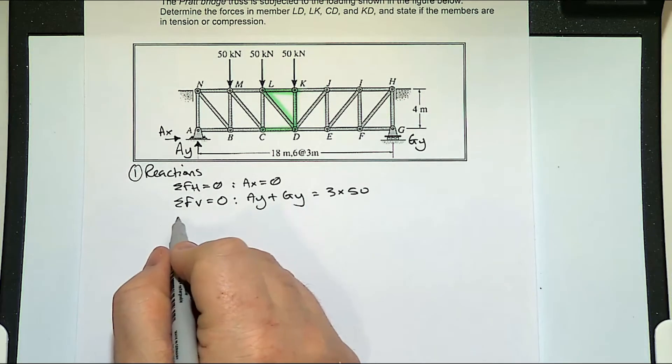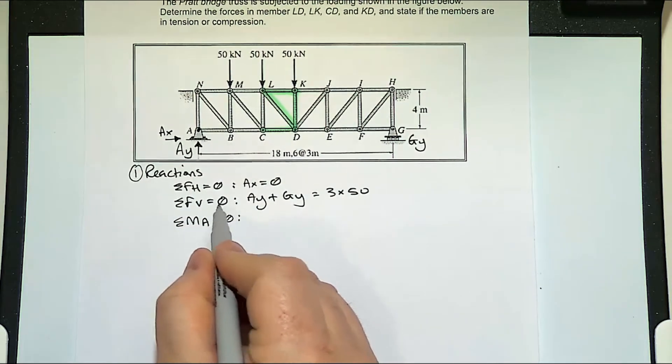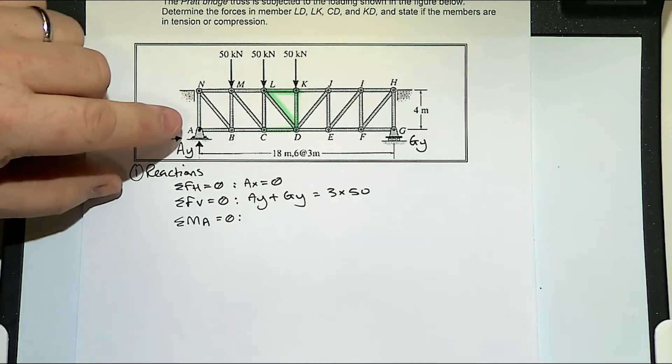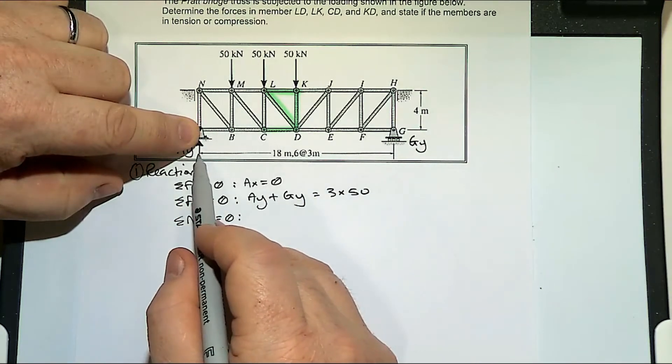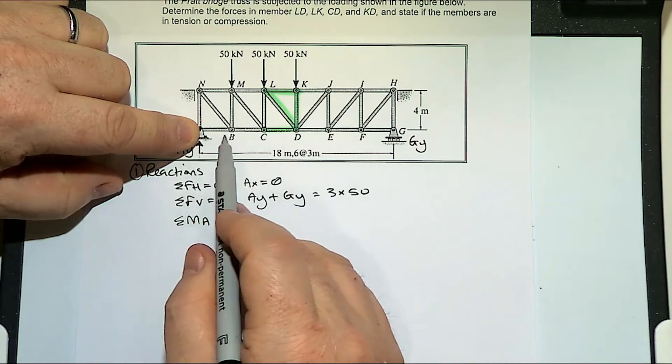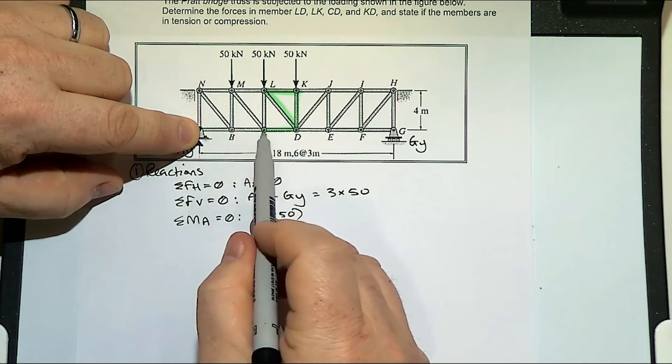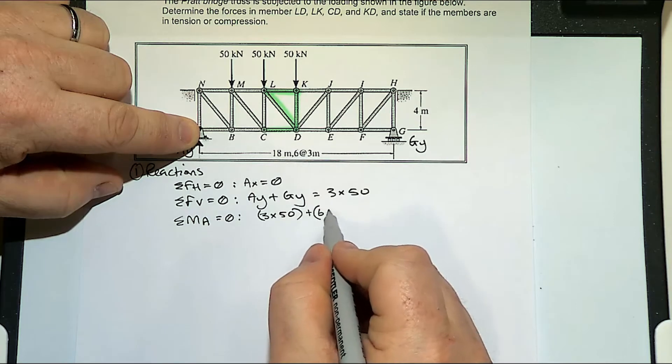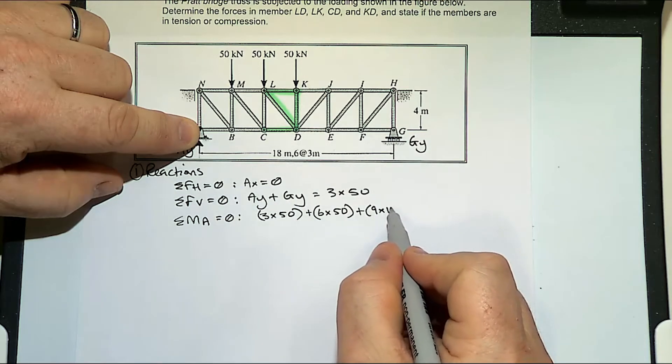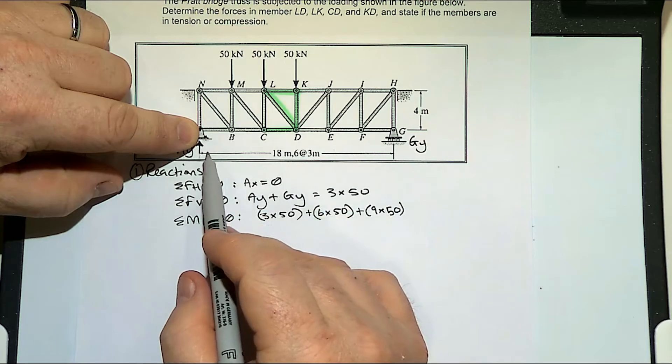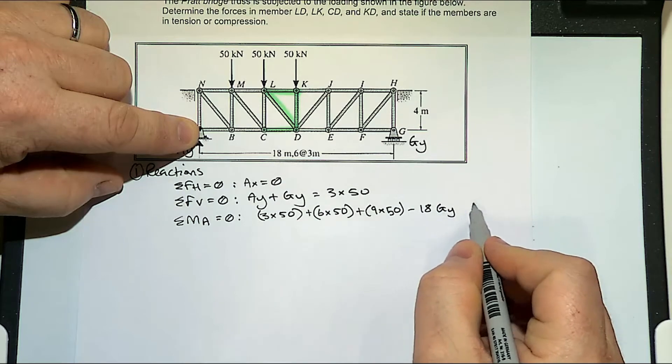If we take moments around point A, we ignore A_x and A_y. So we have 50, this is 18 metres long, so it's 6, 3 metres. So we've got 3 times by 50, 6 times by 50, and 9 times by 50. And then, going the other way, we've got 18 times by G_y. All of that equals zero.